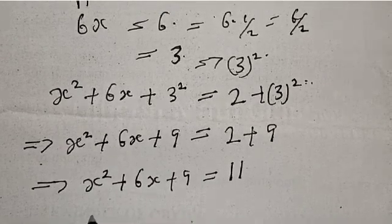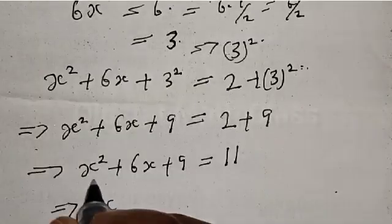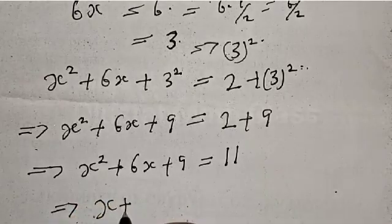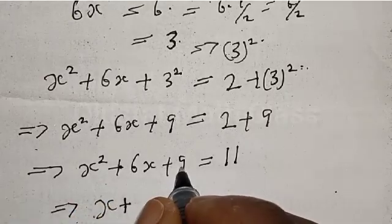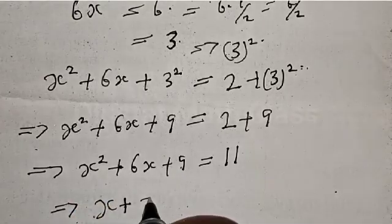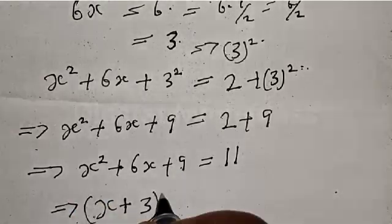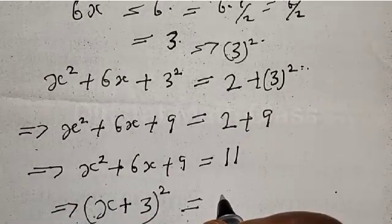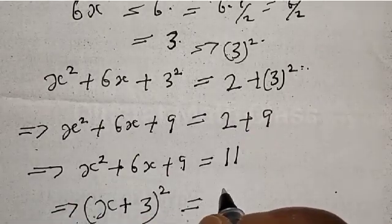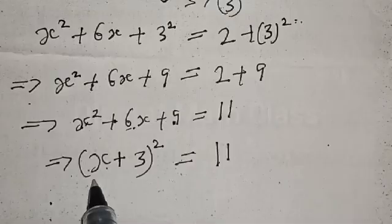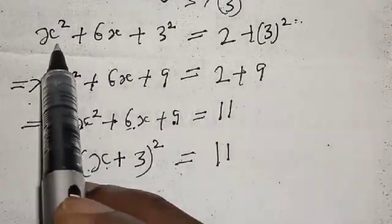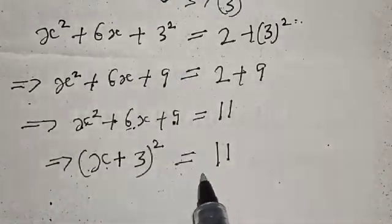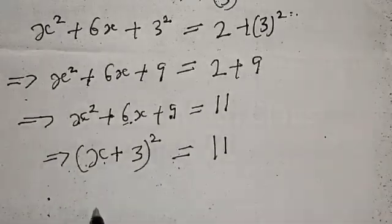For the left-hand side, we have x, the sign is plus, and here is 3. We square it, and it is equal to 11. So we have x plus 3, all squared, is equal to 11.